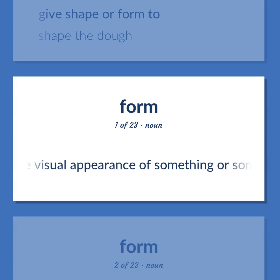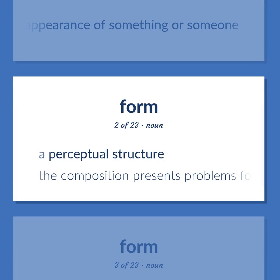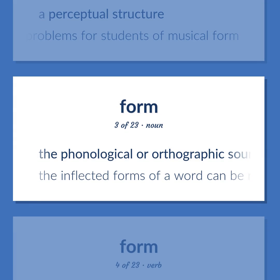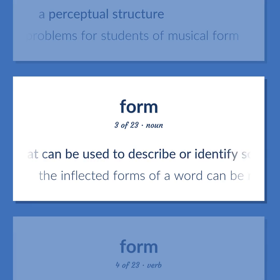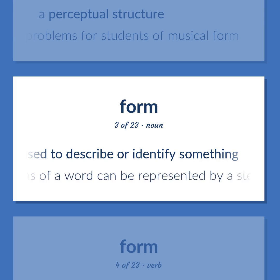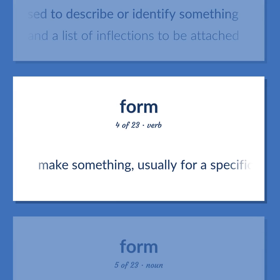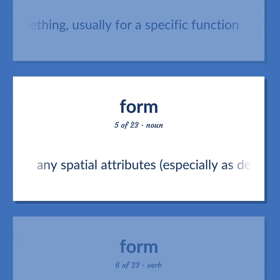Form: The visual appearance of something or someone. A perceptual structure. Example: The composition presents problems for students of musical form. The phonological or orthographic sound or appearance of a word that can be used to describe or identify something. The inflected forms of a word can be represented by a stem in a list of inflections to be attached. Make something, usually for a specific function. Any spatial attributes, especially as defined by outline.